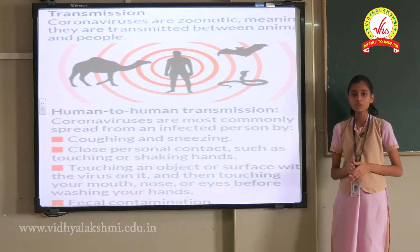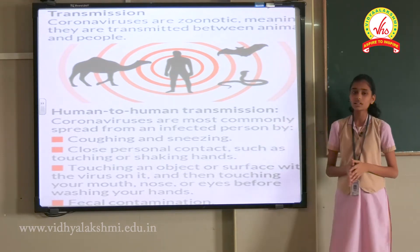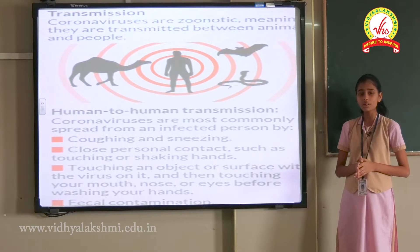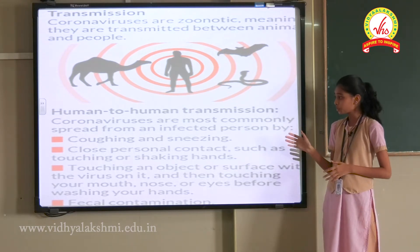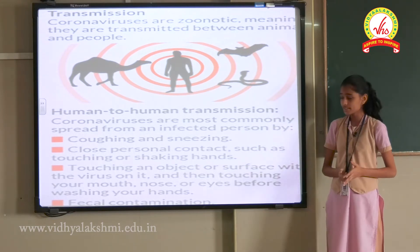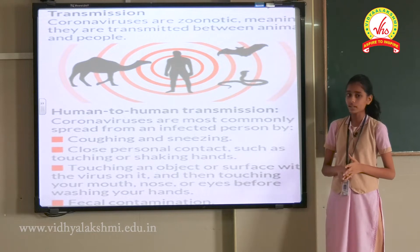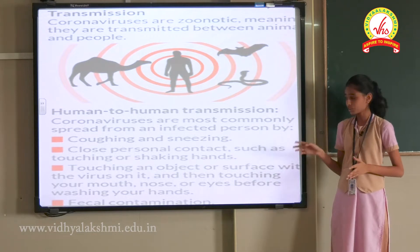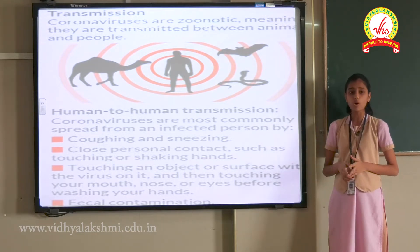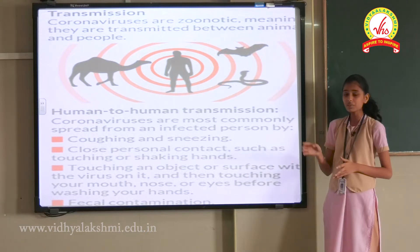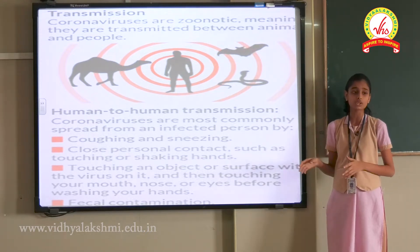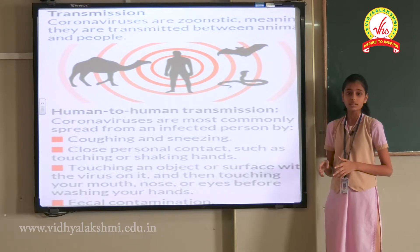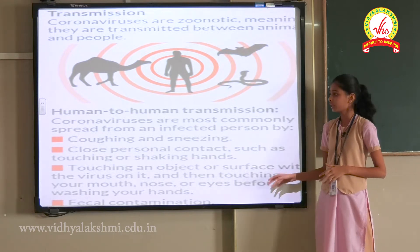Let's see human transmission. Coronavirus are most commonly spread from an infected person through coughing and sneezing, close personal contacts such as touching and shaking hands, touching an object or surface with the virus on it and immediately touching your mouth, nose and eyes without washing your hands, and fecal contamination.